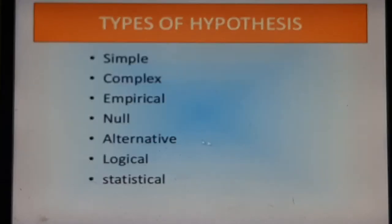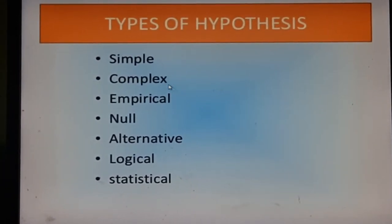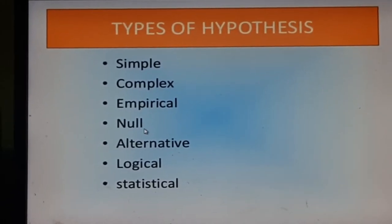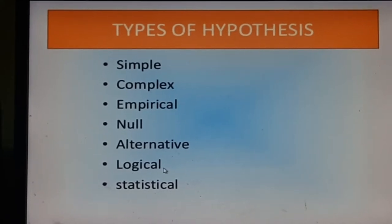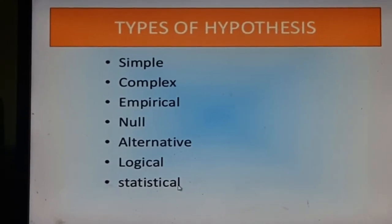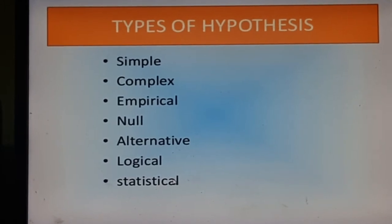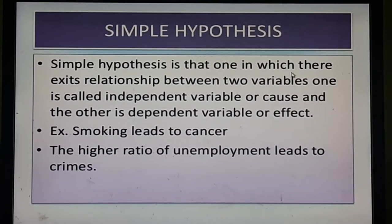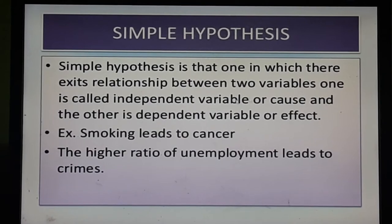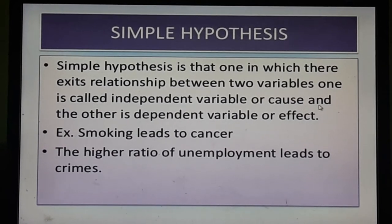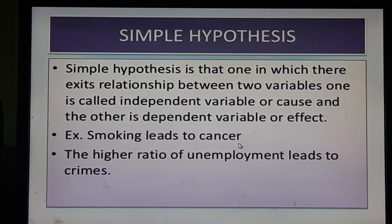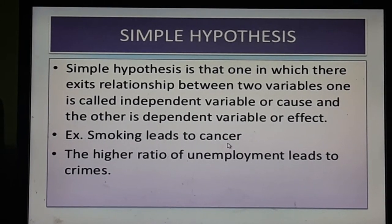There are seven types of hypothesis: simple hypothesis, complex hypothesis, empirical hypothesis, null hypothesis, alternative hypothesis, logical hypothesis, and statistical hypothesis. Simple hypothesis is one in which there exists a relationship between two variables — one is called the independent variable or cause, and the other is the dependent variable or effect. For example, smoking leads to cancer; here, smoking is the independent variable and cancer is the dependent variable.